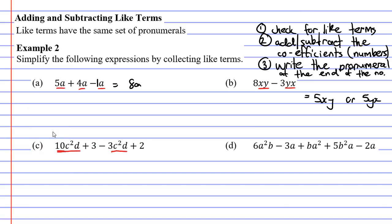So we've got a coefficient of 10 and we've got a coefficient and we've got to be really careful it's not just 3 it's minus 3. So we're going to add or subtract the coefficients. We're going to go 10 minus 3 which is 7 and next to this we're going to write the set of pronumerals which is c²d.